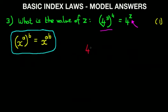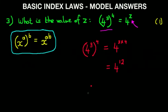So we have 4 to the power of 3, in brackets, to the power of 4. This becomes 4 to the power of 3 times 4, and that results in 4 to the power of 12. Therefore z equals 12. And that is our answer.